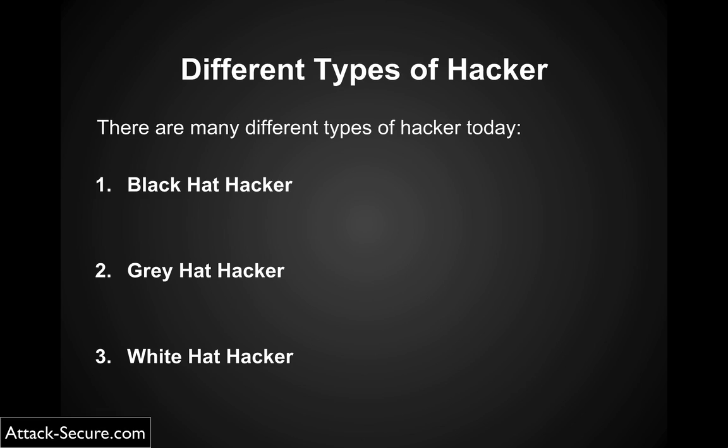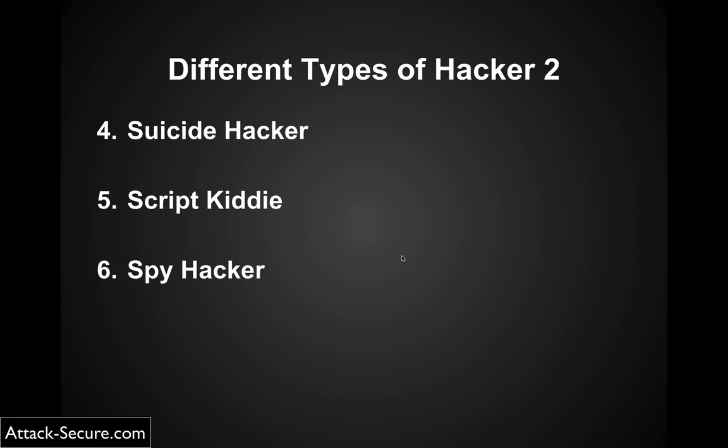Now who is a gray hat hacker? He is between black and white. He can do many illegal things but also good things — he can help companies secure their systems. Sometimes he may hack companies to steal some information or change files like index files, and have fun hacking systems illegally. Or he can use his skills to work as a penetration tester. He is a mix between black and white.